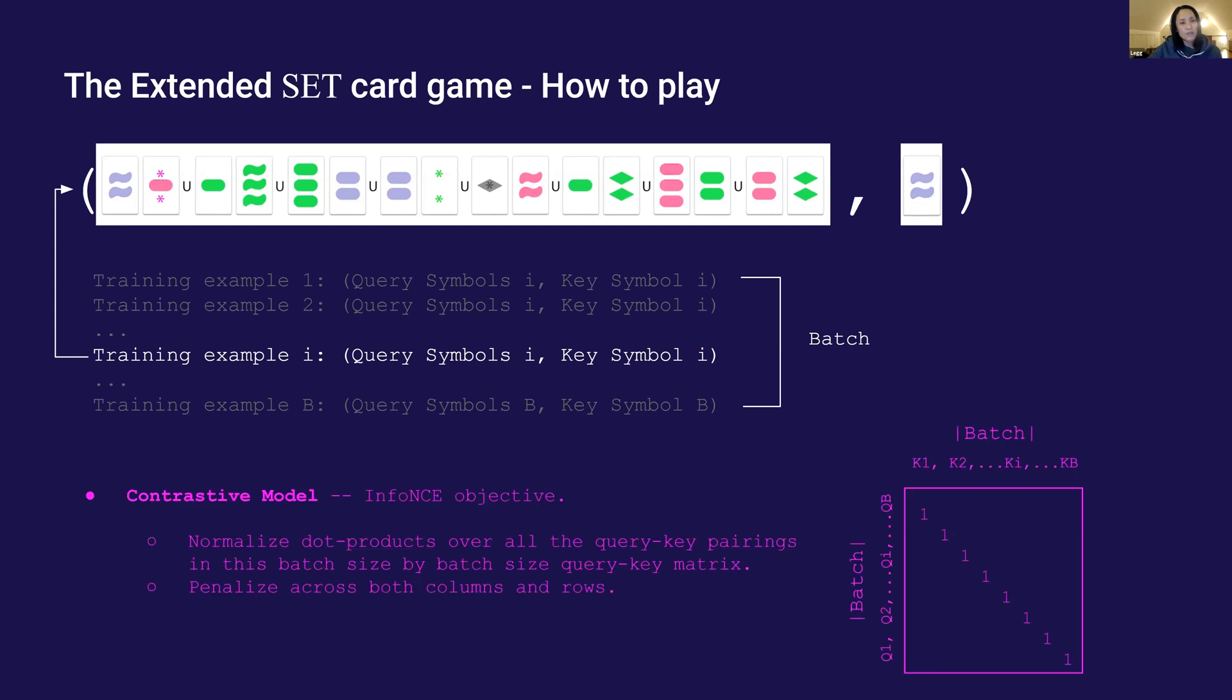The contrastive model uses the InfoNCE training objective, which normalizes the dot product over all the query key pairings in this batch size by batch size query key matrix. The scores are penalized across both columns and rows.